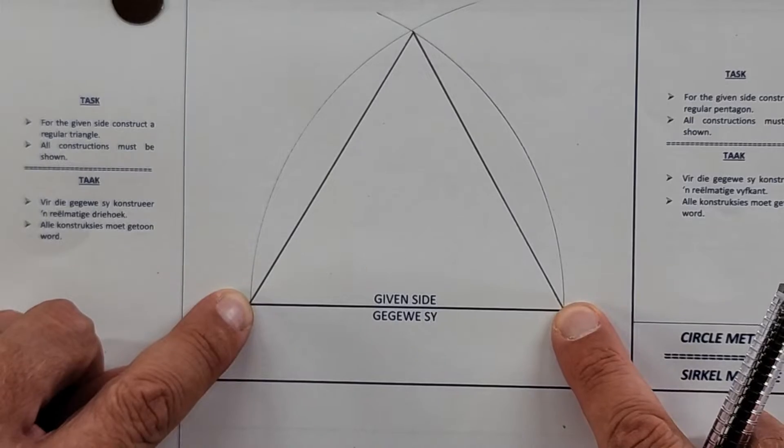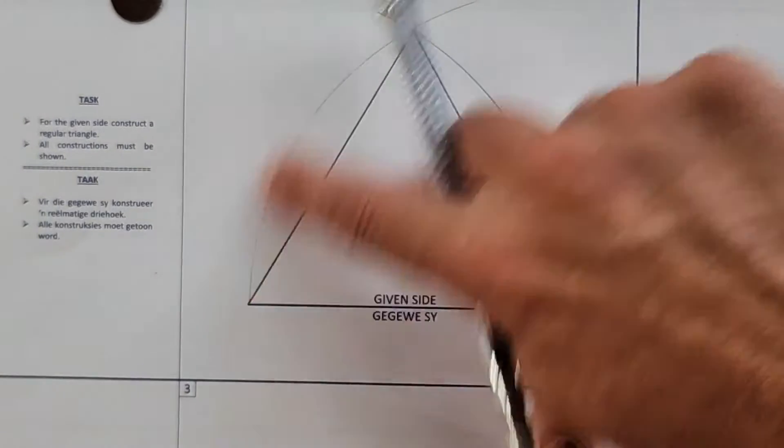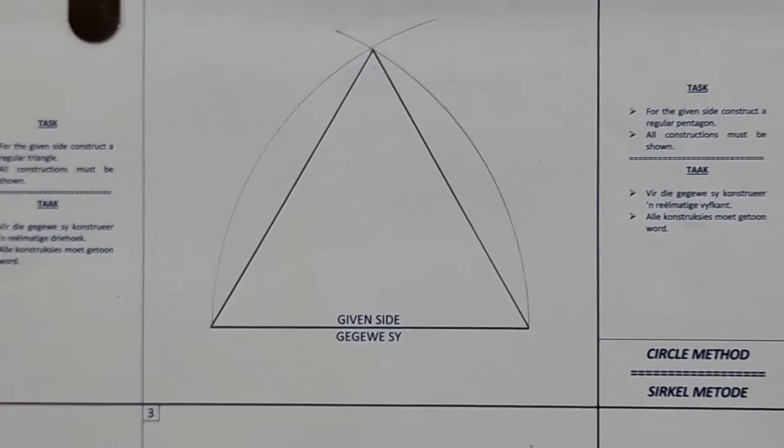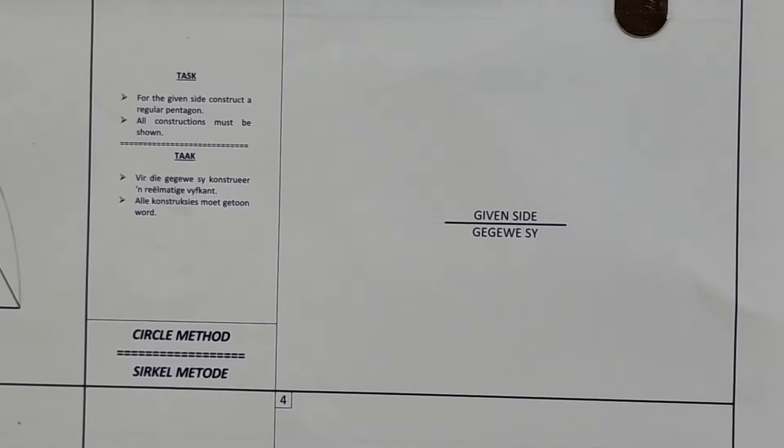Okay, using the base, two arcs, flip it, where they meet, that's the center for your triangle. Right, let's get on to the next one, because people...